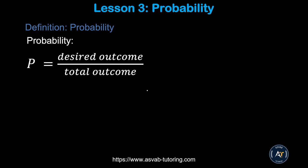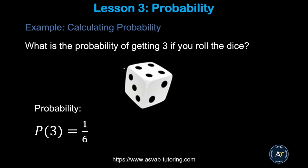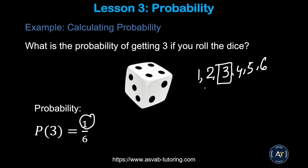The next thing we'll learn is probability, which is also a very common topic on officer candidate tests. Probability is defined as desired outcomes over total outcomes. For example, if you are rolling a die, it has 6 sides: 1, 2, 3, 4, 5, 6. What is the probability of getting a 3? There is only one 3, and there are 6 total possible outcomes, so the probability of getting a 3 is 1 out of 6.